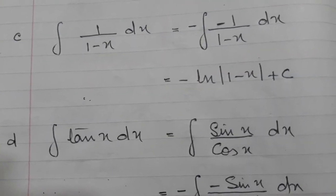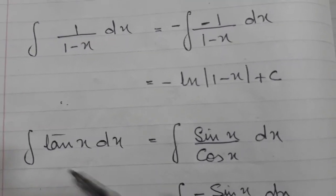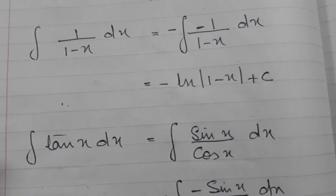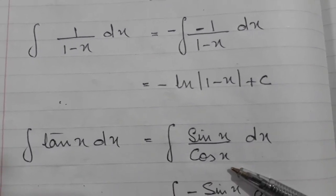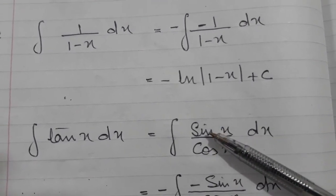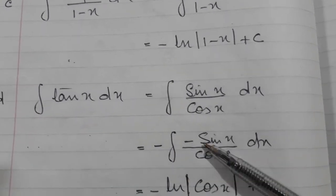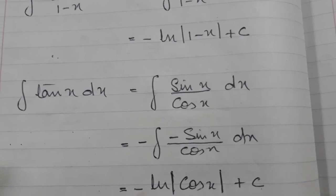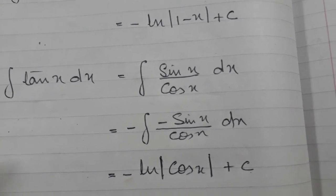Let's see the integration of tan x — you can try cot x on the same line. In place of tan x I use the identity sin x over cos x. The differentiation of cos x is −sin x but I only have sin x, so I place a −1 outside so that the derivative of the denominator is present in the numerator. Using the ln form, I get the answer: −ln|cos x| + c.